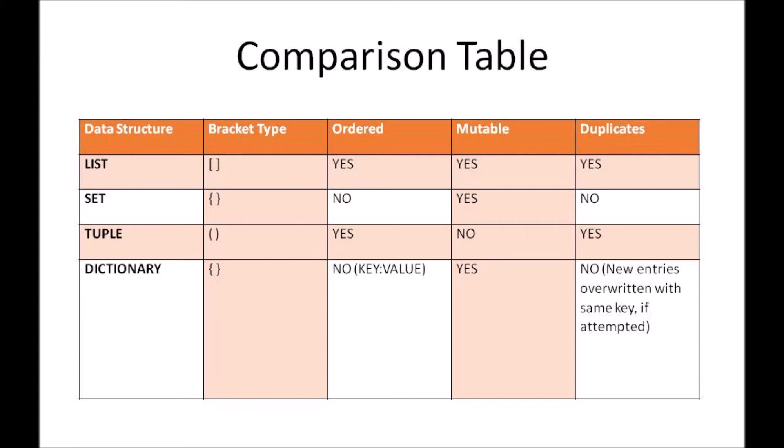And the first column differentiates the syntactical difference which is bracket type which is given in column 1, I am sorry, column 2. And then column 3 tells whether it is ordered or unordered, and the next column mutable or immutable. And the last column describes whether these data structures are accepting duplicates or not.